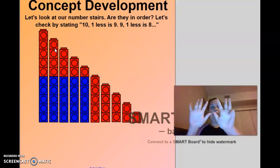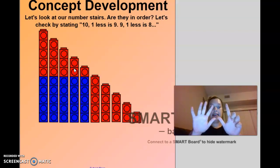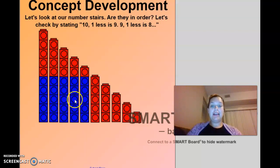Ten. I took one off. One less is nine. Nine, eight, seven, six, five, four, three, two, one. Nine, one less is eight. Eight, seven, six, five, four, three, two, one. I'm going to pop another cube off. One less is seven. Good job. Seven, six, five, four, three, two, one. Seven, one less is six.